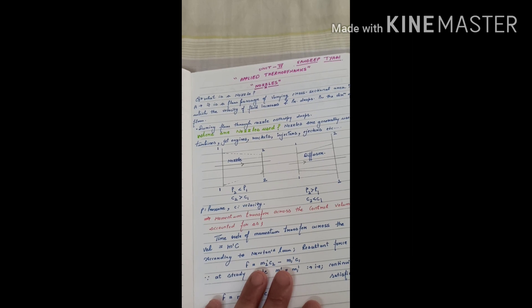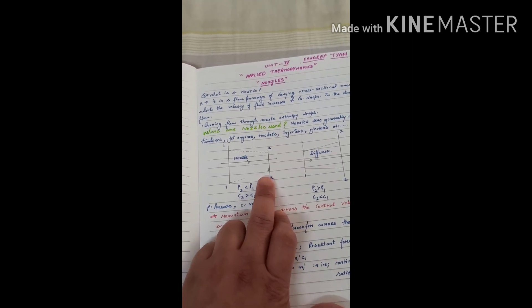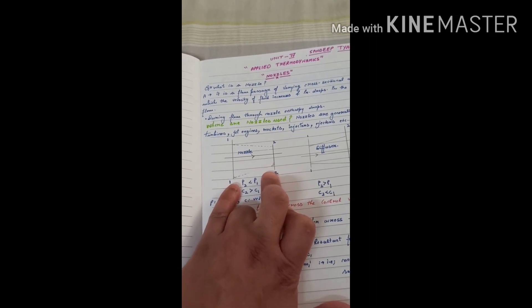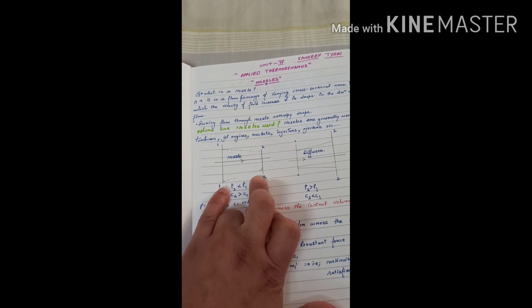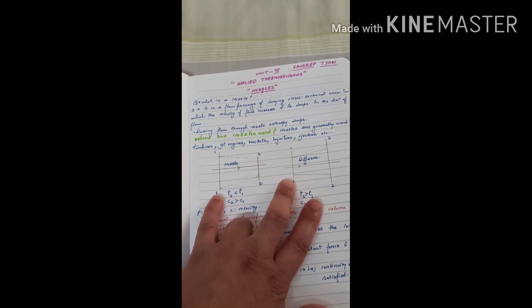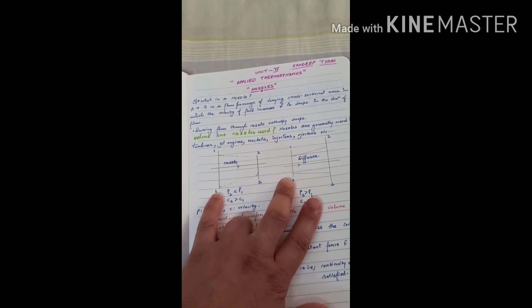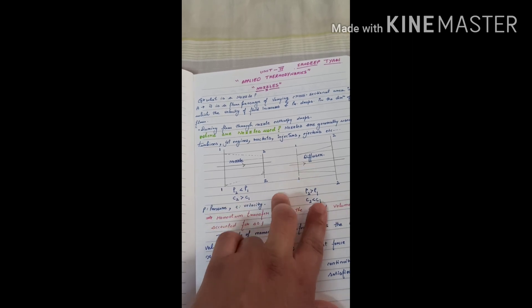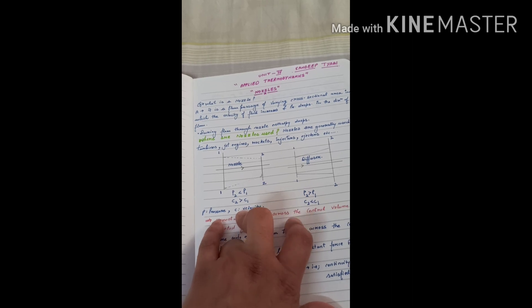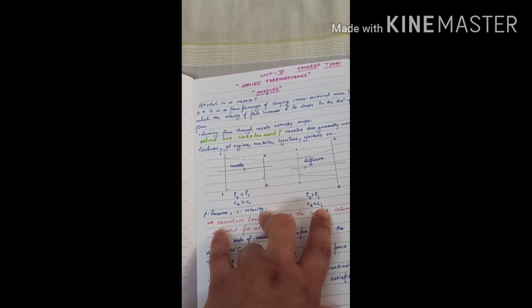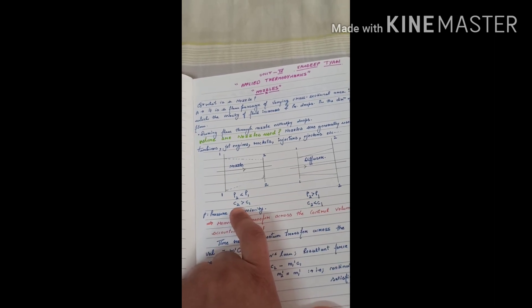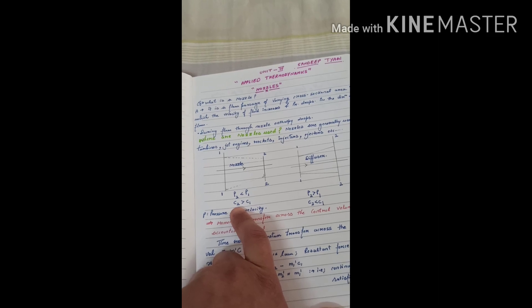In a nozzle, the velocity of the fluid increases while passing through it, and the pressure drops at the exit. So at point 2, the velocity is increased and the pressure is dropped compared to point 1. Here, C represents the velocity of the fluid, and C2 — the velocity at point 2 — is greater than C1.